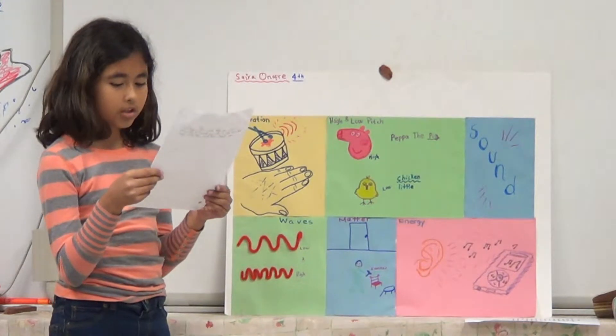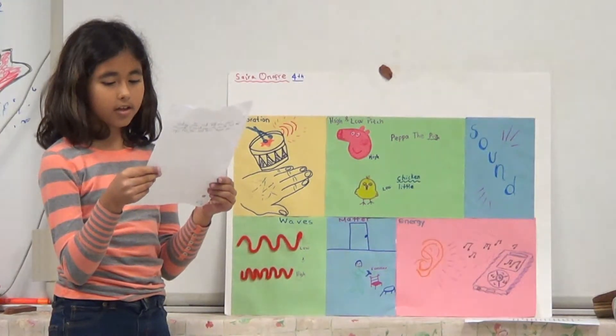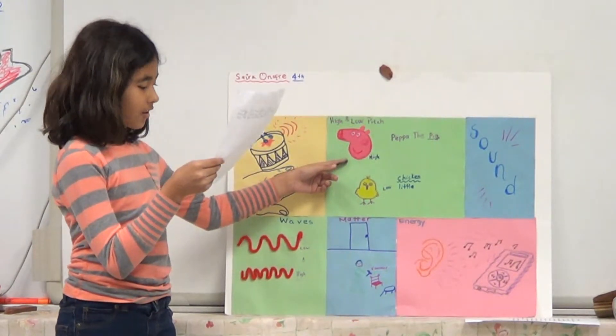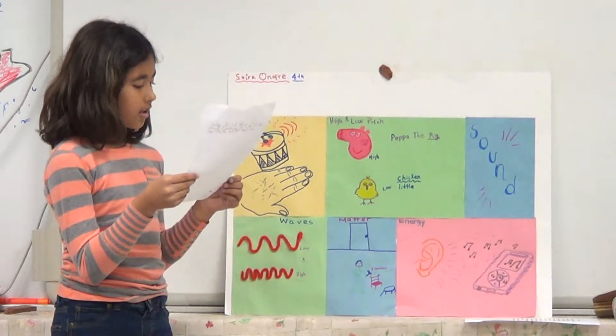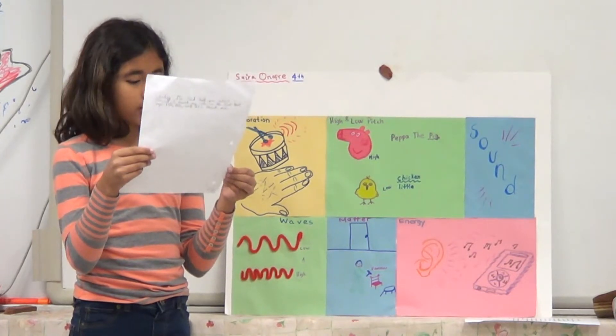Next is high and low pitch. The pitch of a sound is how high or low it is. For example, here I have two animals. They are a pig and a chick. The pig has a high pitch—oink, oink. The chick has a low pitch.